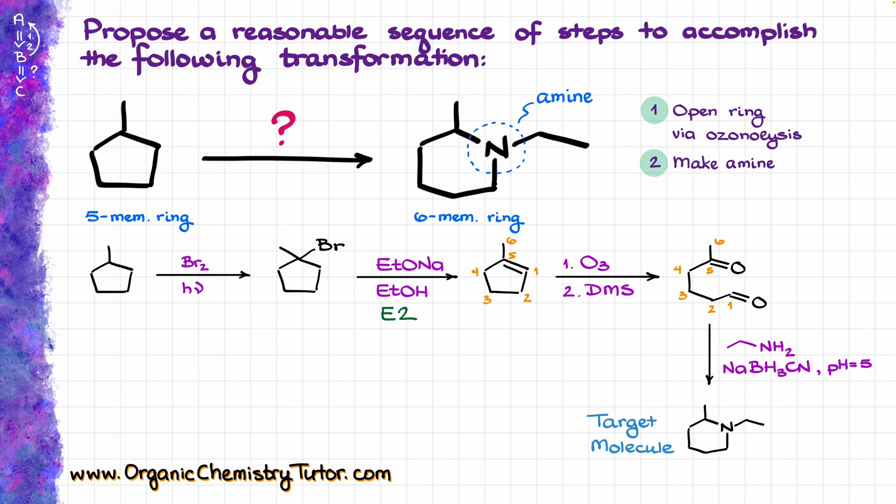Which can reduce the iminium intermediate right during the reaction course, so we don't have to isolate our intermediates and do reductions separately. This way, we can accomplish the entire transformation in just one single synthetic step. And I do have a dedicated tutorial on the reductive amination, so if you need a refresher, check it out. And link is as always in the description below.